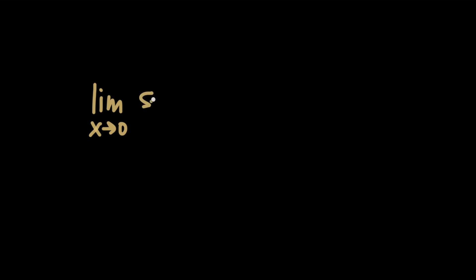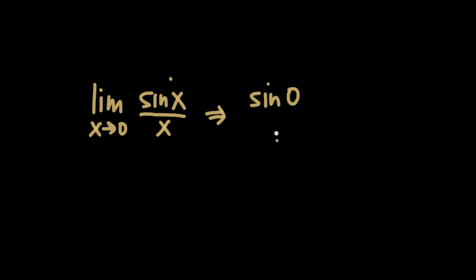Now let's talk about an example where L'Hôpital's rule really helps us out. Let's say that we have the limit as x goes to zero of sine of x over x. We want to find the limit as x gets close to zero, so we try substitution first. When we try substitution, we end up with sine of zero over zero. We know that sine of zero is equal to zero, so through substitution our result is zero over zero. That doesn't help us at all — that's just an indeterminate form.